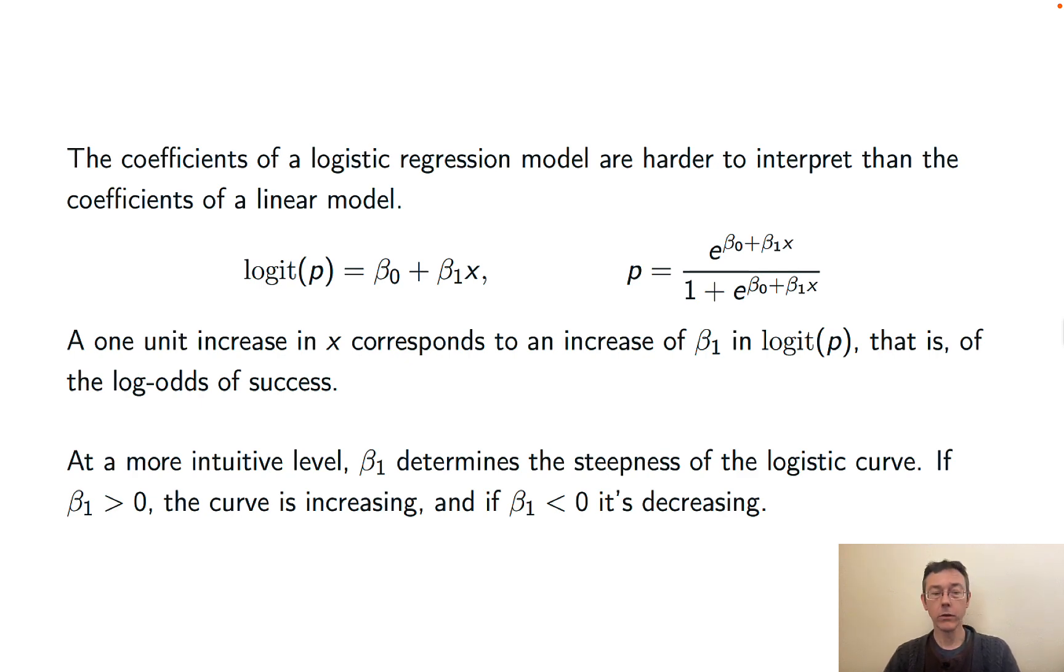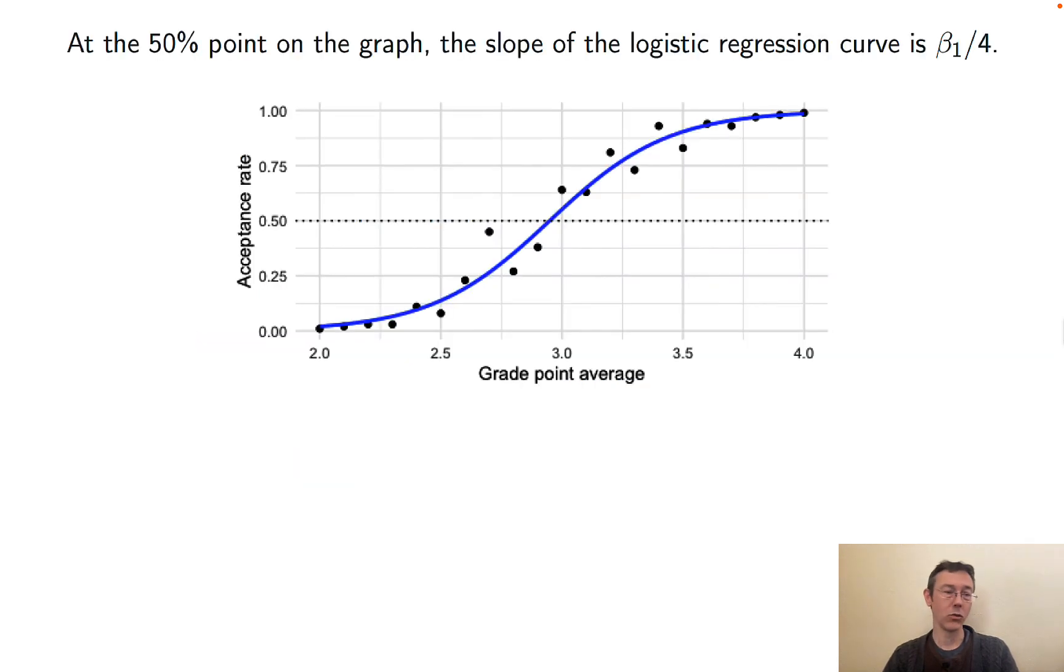If beta 1 is greater than 0, then the curve is going to be increasing from 0 to 1, from around 0 towards 1. And if beta 1 is less than 0, then it's going to be decreasing.